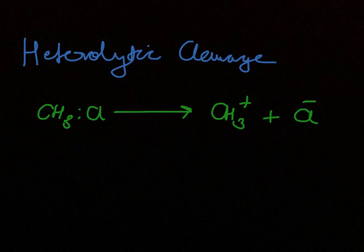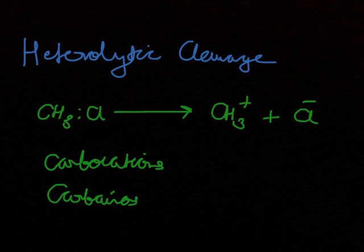New terms which emerge are carbocations and carboanions. Obviously with the name itself we understand that carbocations will have carbon, and carboanions also will have carbon. In this case, the ion which is positively charged and has a carbon is called a carbocation.